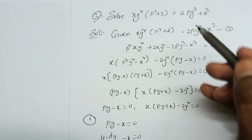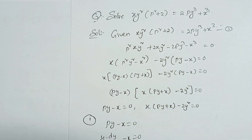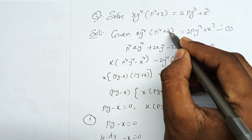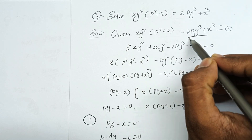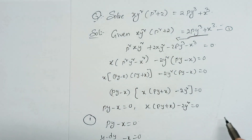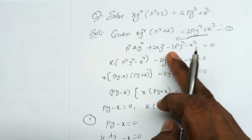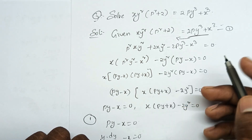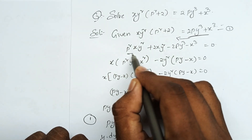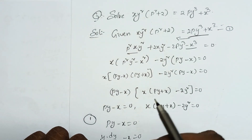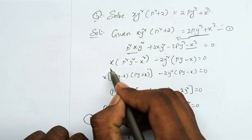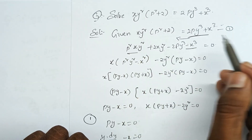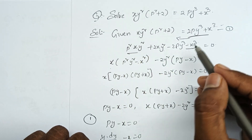Let's take a look at the equation. Multiply this: p squared xy squared, 2xy squared - the E value is equal to 0. Minus 2py cubed minus x cubed is equal to 0. Taking common: p squared times y squared minus xy, x squared will be equal to 0.